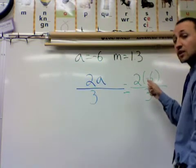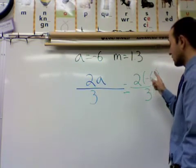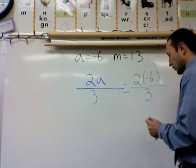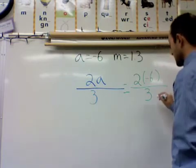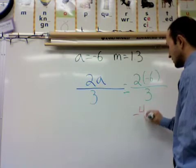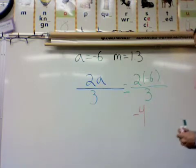2 times negative 6 we know will be a negative 12. Negative 12 divided by 3 is going to give me an answer of negative 4. Let's look at 2 more.